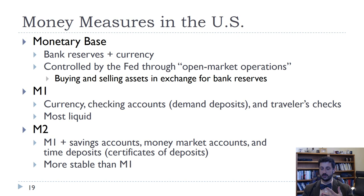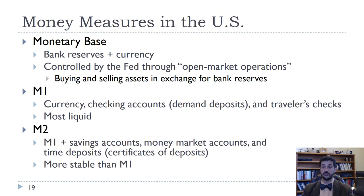M1 is the most liquid, meaning it's the most easily used to buy things. M2 includes M1 plus a whole bunch of other banking accounts — savings accounts, money market accounts, and time deposits, also known as certificates of deposit. M2 is more stable than M1, especially over the last financial crisis.